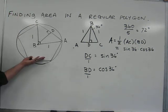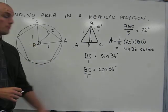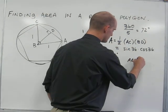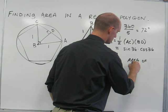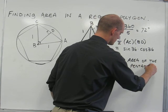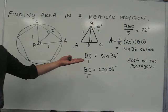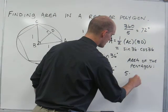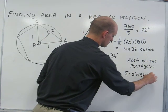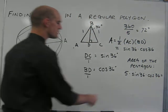So to find the area of the pentagon, we simply multiply the number of triangles, or five triangles, by the area of one of the triangles, sine 36 times cosine 36. The area of the pentagon is a product of five times the area of the triangle, or sine 36 times cosine 36, which is equal to 2.38 square units.